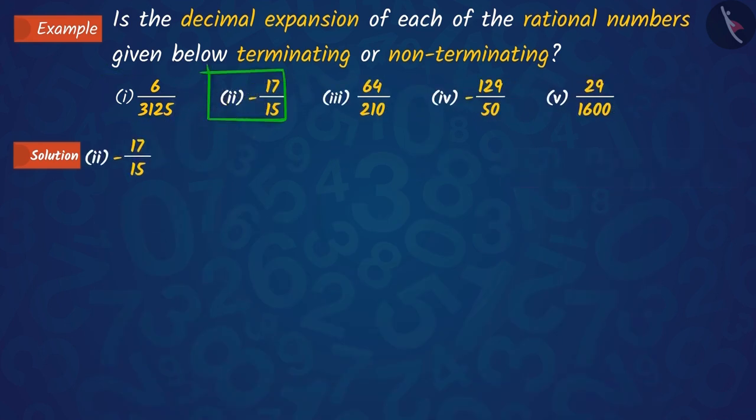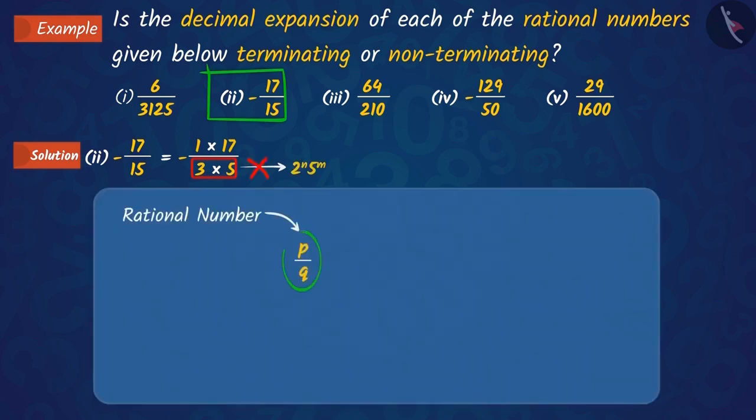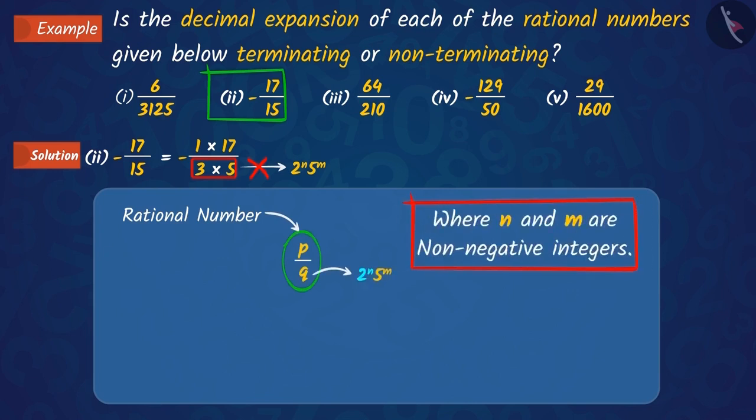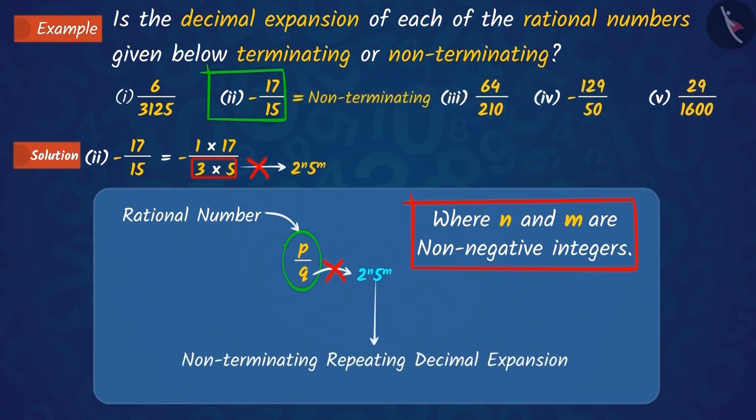Let us now discuss the second rational number, 17 upon 15. After analyzing it, we see that the denominator is not in the form of 2 raised to n into 5 raised to m. You will remember that in a rational number p upon q, if q is not in the form of 2 raised to n into 5 raised to m, then the decimal expansion of the number is non-terminating.